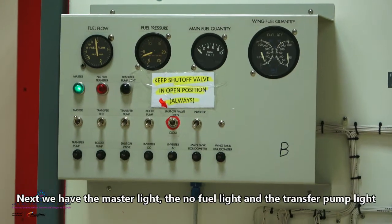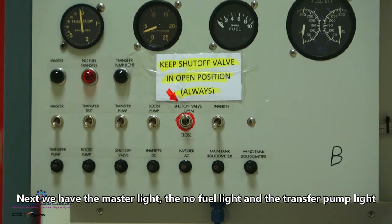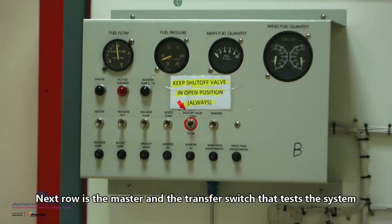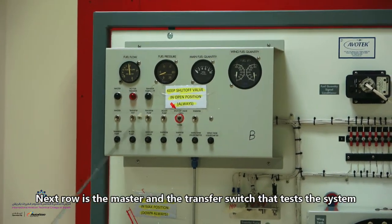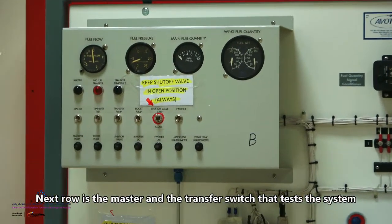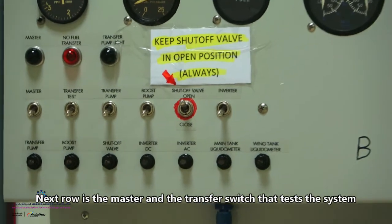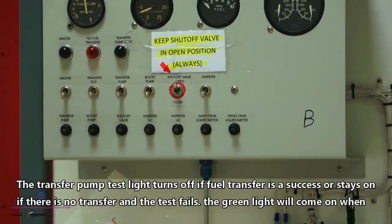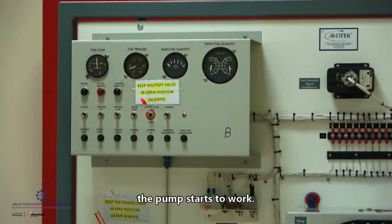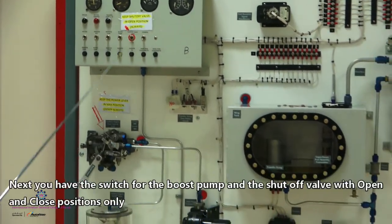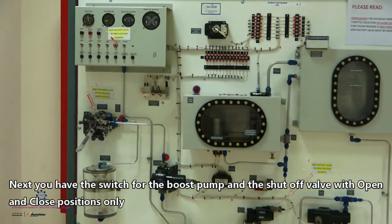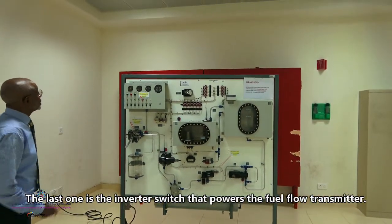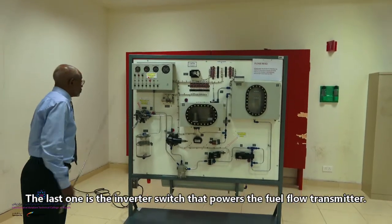Next are these lights. As you see these lights, we have the light for the master and then we have a no fuel light and also a transfer pump light. Next, we have the other row here with switches. The first one is the master switch and then we have the transfer switch which we use for testing. When we test if the pump is transferring, the light will be off. If the light is on, it means there is no fuel that is transferring and then you have a green light for the transfer pump when the pump is on. Then you have a switch for the boost pump and next one is for the shutoff valve with an open and off position only. And then you have the last one, the inverter switch that turns the inverter to power the fuel flow transmitter.